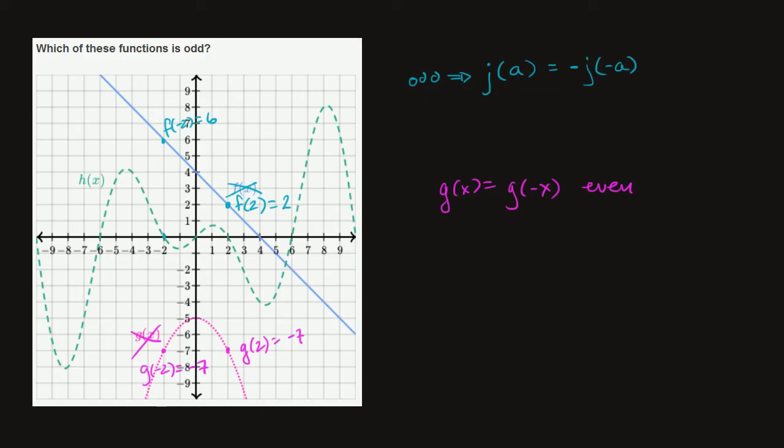So if we, I'll do it in this green color. So if we take h of 1, h of 1, and we can look at it even visually. So h of 1 gets us right over here. h of negative 1 seems to get us an equal amount, an equal distance, negative. So it seems to fit for 1.